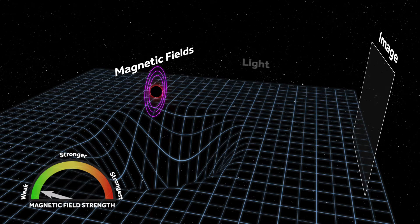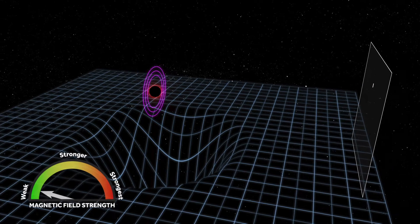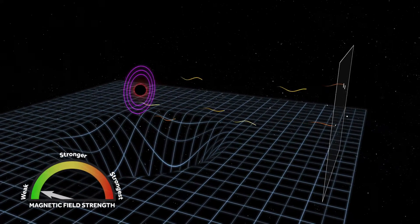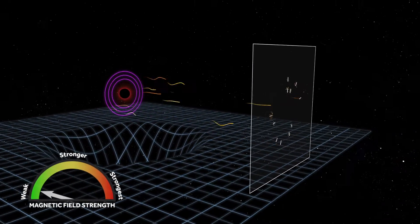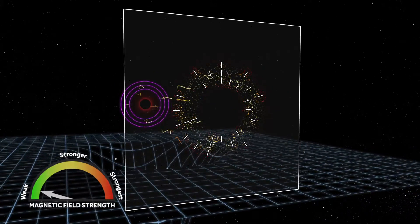The plasma produces light waves that oscillate perpendicular to the magnetic fields, resulting in this polarization pattern, shown here using white tick marks.